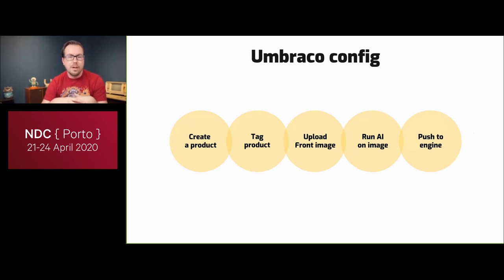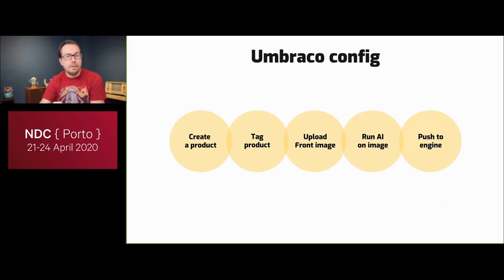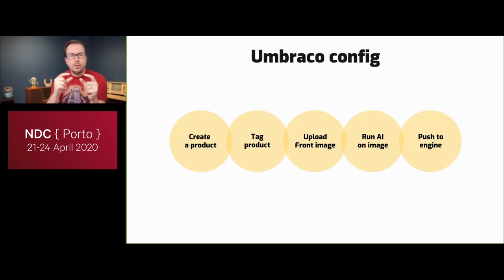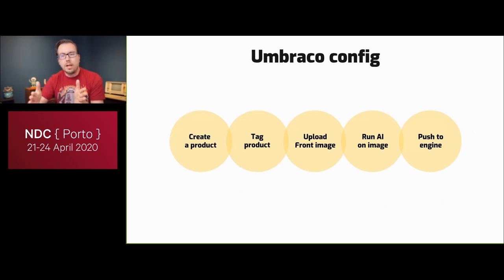In the management interface, to add a product to the AI solution you first create it, tag the product type, specify which icons are on it, and upload a front image. The AI immediately kicks in and starts scanning the front image — identifying logo positions, icon positions — and you save the configuration. You can test it and then push the new package to the engine where it runs in production.